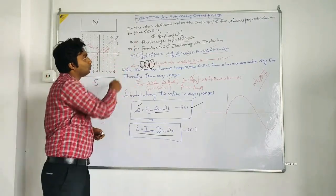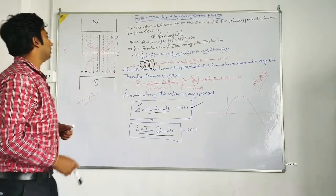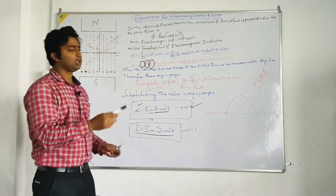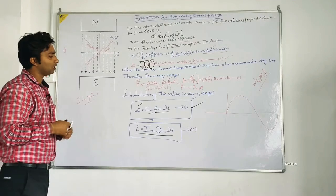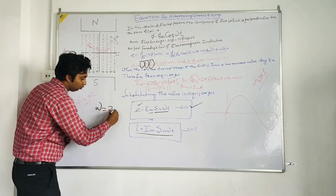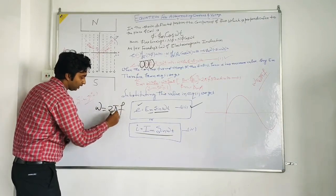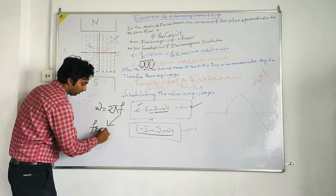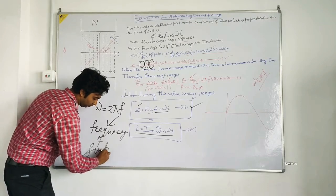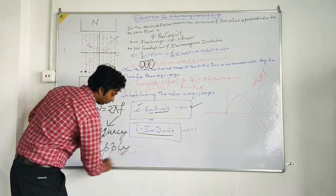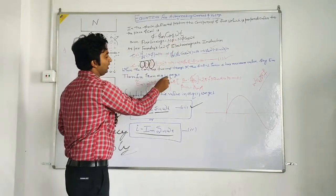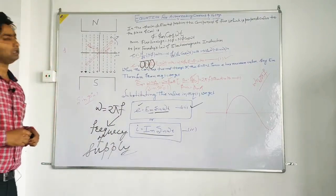So this is our equation for alternating current and voltages. Now in the next video we will discuss the basic terminologies associated with this. And one more thing, omega is equal to 2 pi f where f is the frequency of supply and bm is the maximum flux density. Thank you.